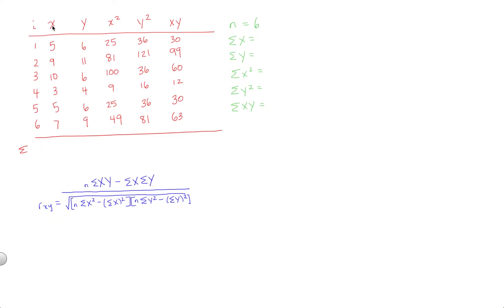So sigma x, the sum of the x values that we're going to need here, is simply adding up 5 plus 9 plus 10 plus 3 plus 5 plus 7. If you do that, you're going to get 39. Adding up the next column gets you 42, and this is going to be sigma y. Adding up the next column, sigma x squared is 289. Sigma y squared is 326. And finally, sigma xy is 294.